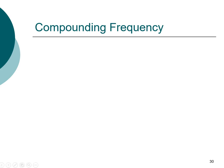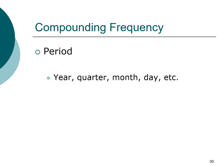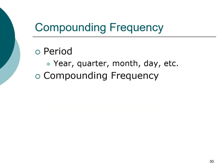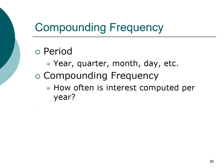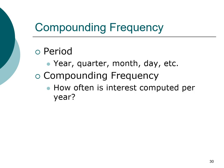First, let us reveal what we mean by the most frequent time period that you will encounter in finance. Typically, cash flow may occur on an annual basis or per year, quarter, month, day, and so forth. Compounding frequency refers to how often interest is computed per year.